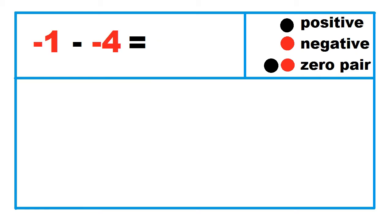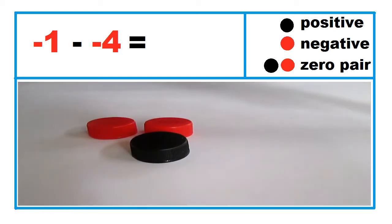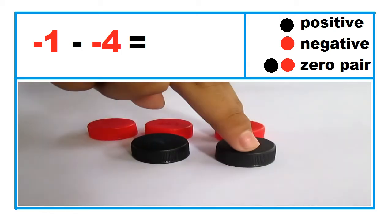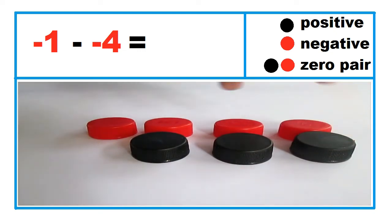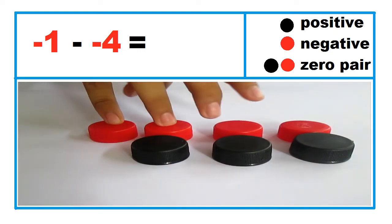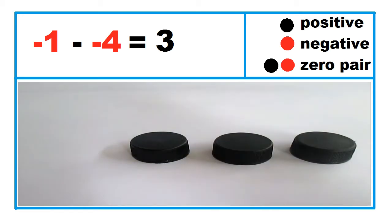Another example: negative 1 minus negative 4. To take away four red caps from one red cap, introduce three zero pairs, then take away four red caps. So, negative 1 minus negative 4 equals 3.